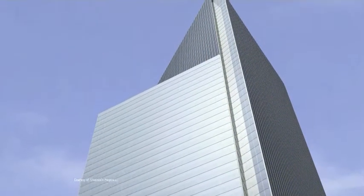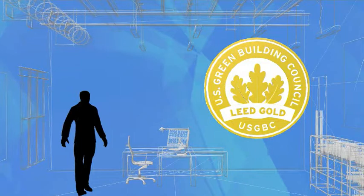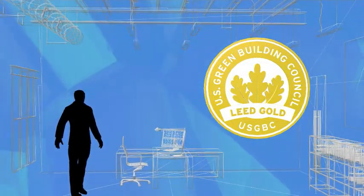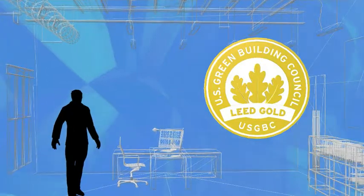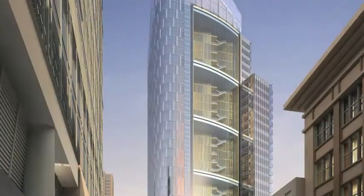These include landmark installations at the World Trade Center site, including the Four World Trade Center tower. This 72-story building is designed to meet LEED Gold criteria, and a building automation system from Automated Logic is an integral component.